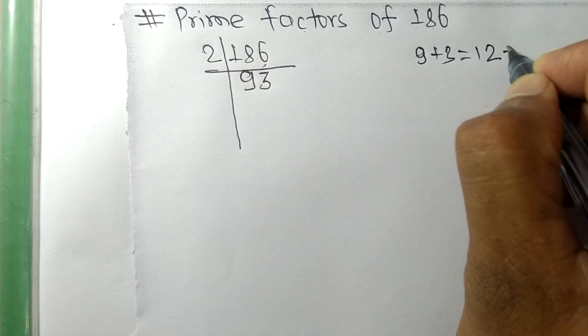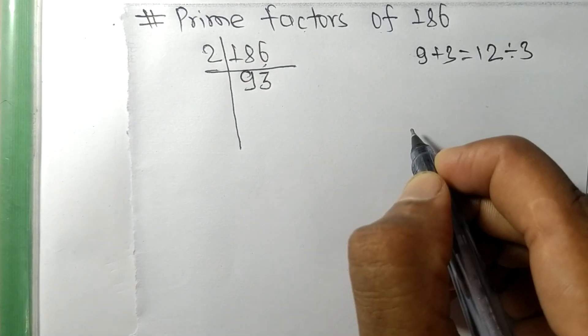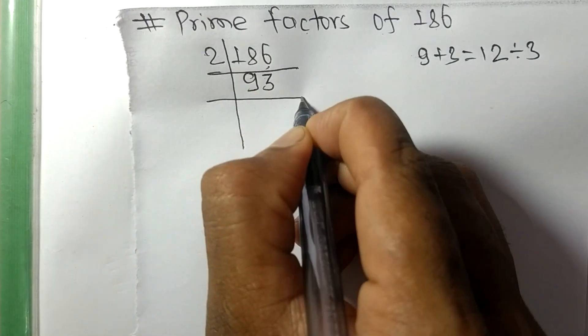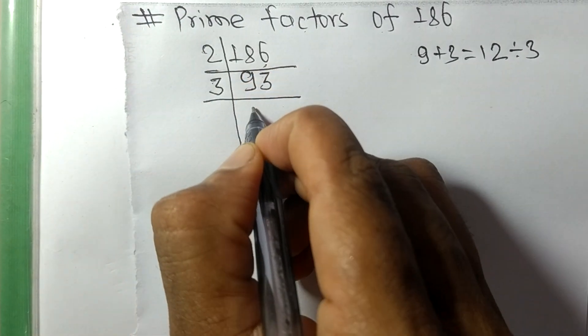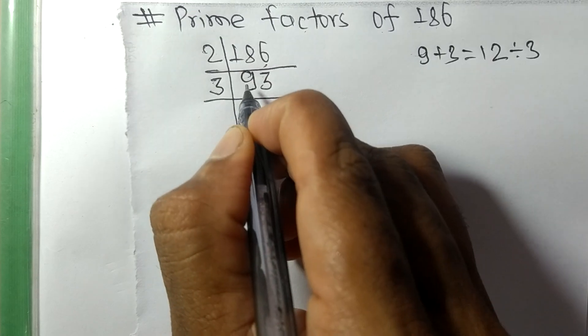And 12 is exactly divisible by 3, so 93 is also divisible by 3. So 3 times 3 is 9 and 3 times 1 is 3.